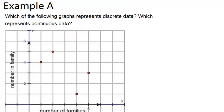In example A, it asks which of the following graphs represents discrete data? Which represents continuous data?